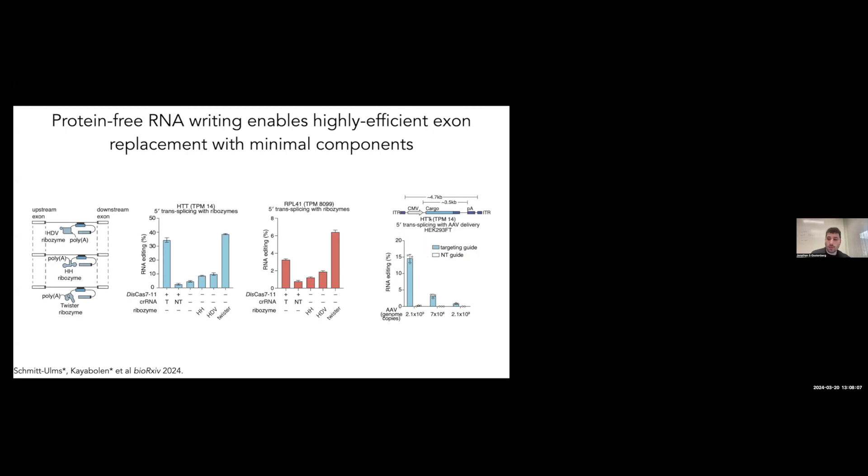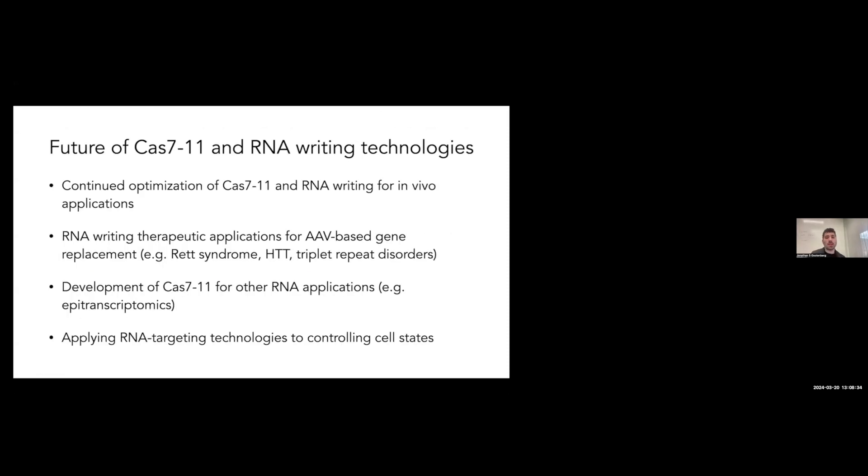We're targeting the Huntington's transcript. We can actually target and remove the 5' prime exon, the exon one that contains the expanded repeats. This allows us to do an AAV therapy for Huntington's here in a HEK293T model. We're very excited about the prospect of this being able to actually manipulate and provide a therapeutic modality without having to edit the genome at all.